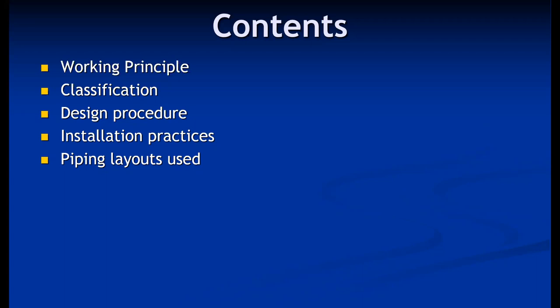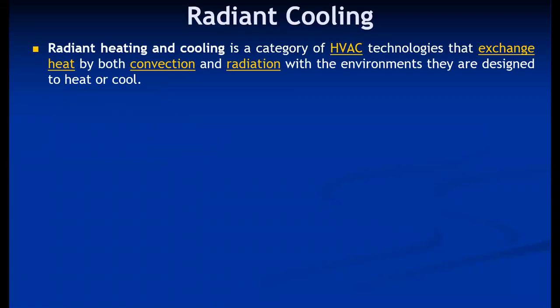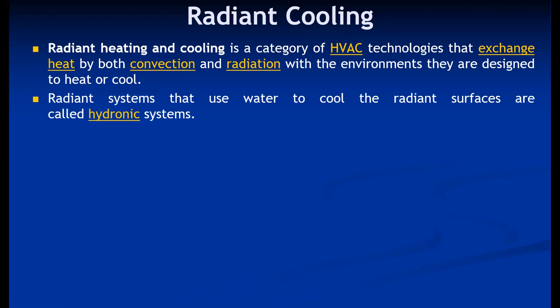design procedure, installation practices, and piping layout. Radiant heating and cooling is a category of HVAC technologies that exchange heat by both convection and radiation with environments designed to heat or cool. Radiant systems that use water to cool the radiant surfaces are called hydronic systems.